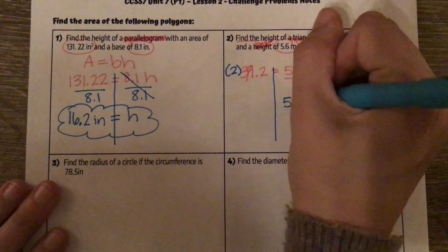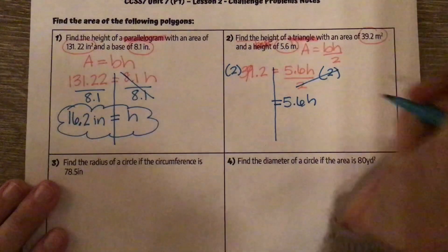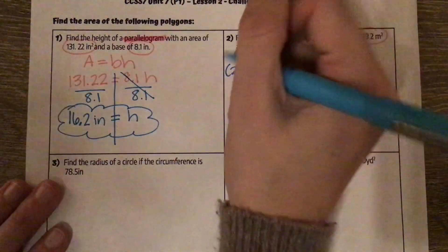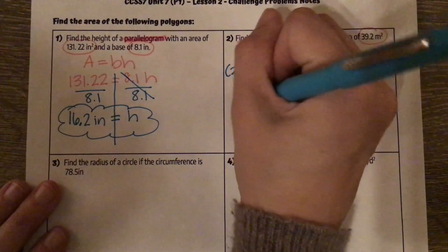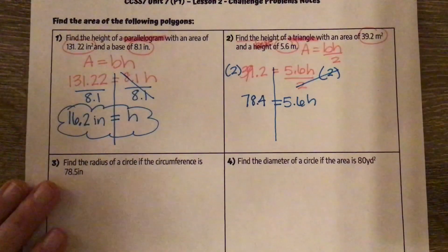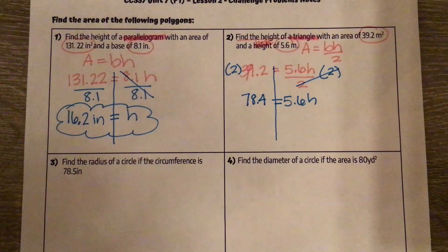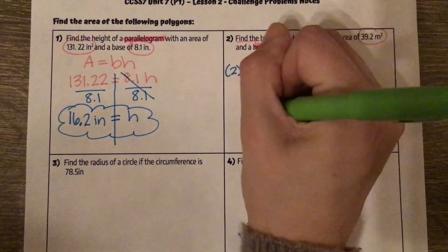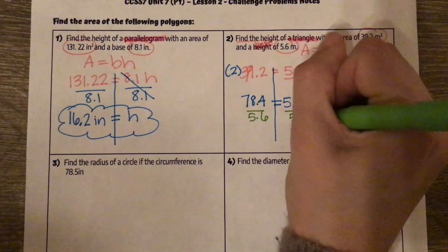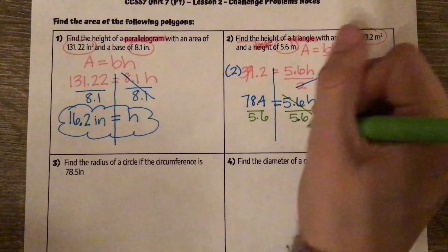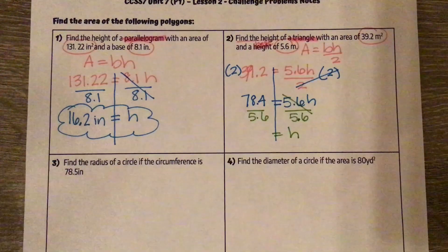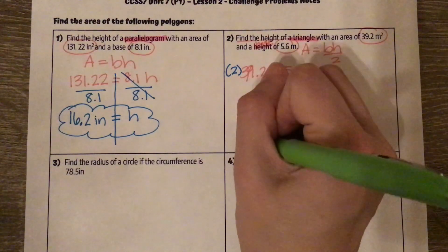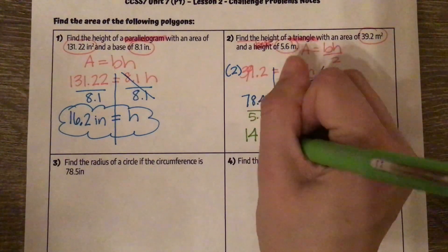These two cancel out, leaving us with 5.6h equals 39.2 times 2, which is 78.4. Then our next step: h is being multiplied by 5.6, so I'm going to divide both sides by 5.6. That cancels out, and 78.4 divided by 5.6 is 14. Our units are meters.